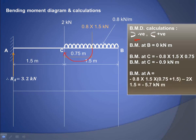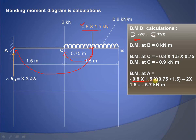For the bending moment at A, we consider the UDL converted to a point load of 0.8 × 1.5 kN acting at a distance of 0.75 + 1.5 meters from A, producing a clockwise (negative) moment — this is the first term. The point load of 2 kN acts at a perpendicular distance of 1.5 meters from A, also producing a clockwise moment — this is the second term. The total bending moment at A is −5.7 kNm.